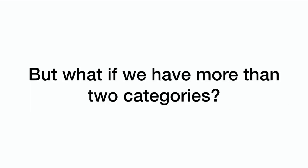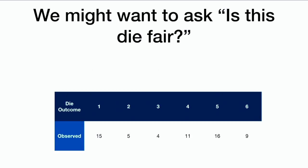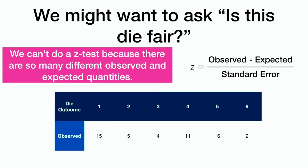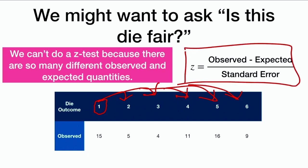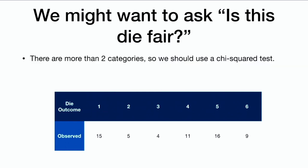But what if we have more than two categories? We might want to ask: is this die fair? We can't do a z-test because there are so many different observed and expected quantities, and even if we chose one quantity, that doesn't really define what happened with all the rest. So we can't compute a z-statistic — there are more than two categories, so we should use a chi-squared test.